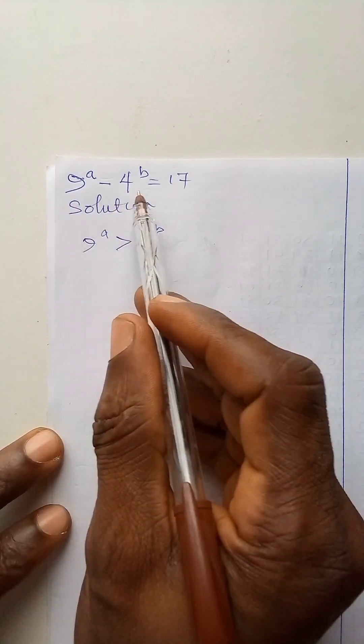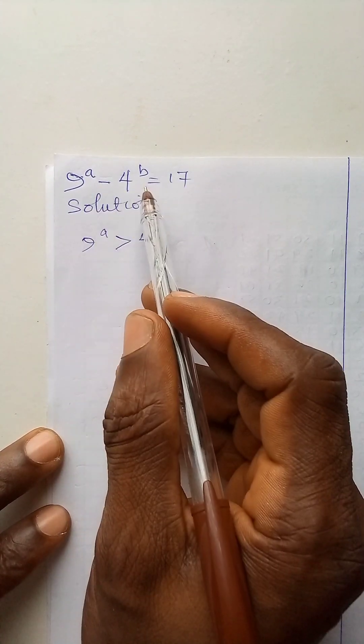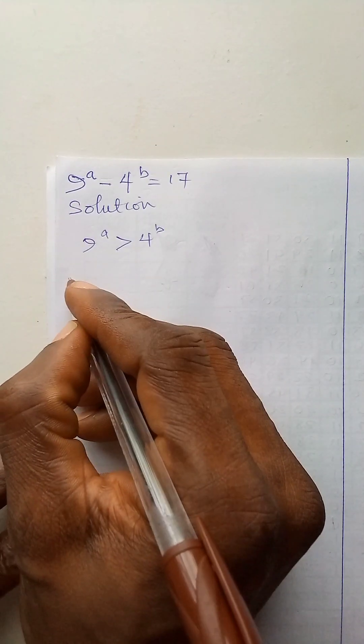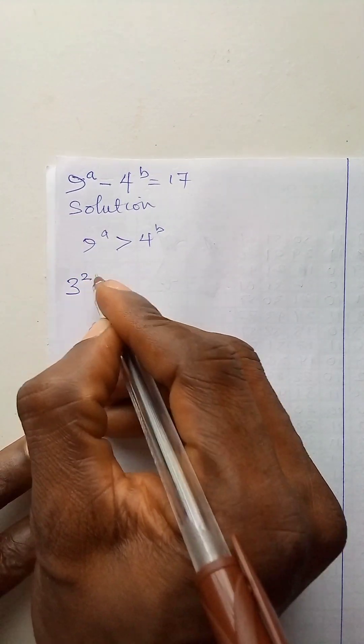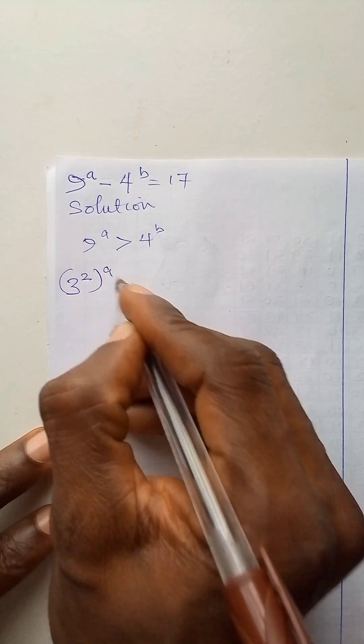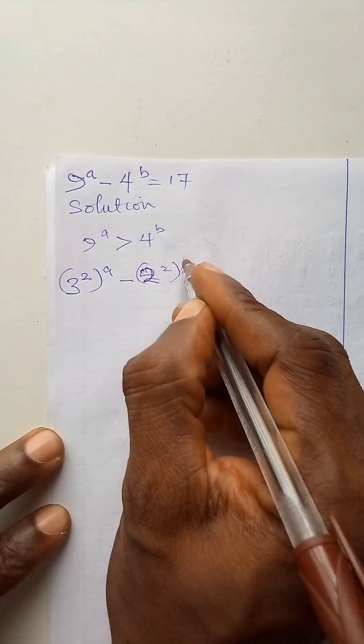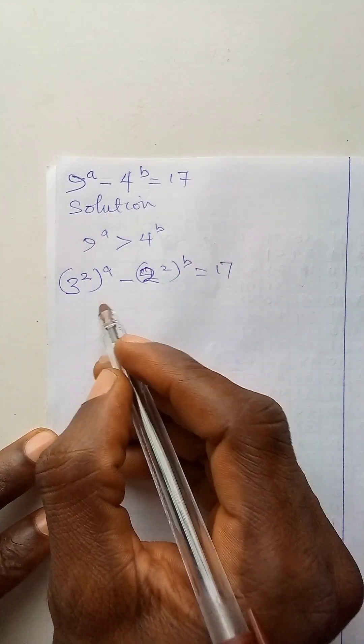Now, this expression is difference of 2 squared, so let us express it as difference of 2 squared. We have 3 to power 2 to power a minus 2 to power 2 to power b is equal to 17.